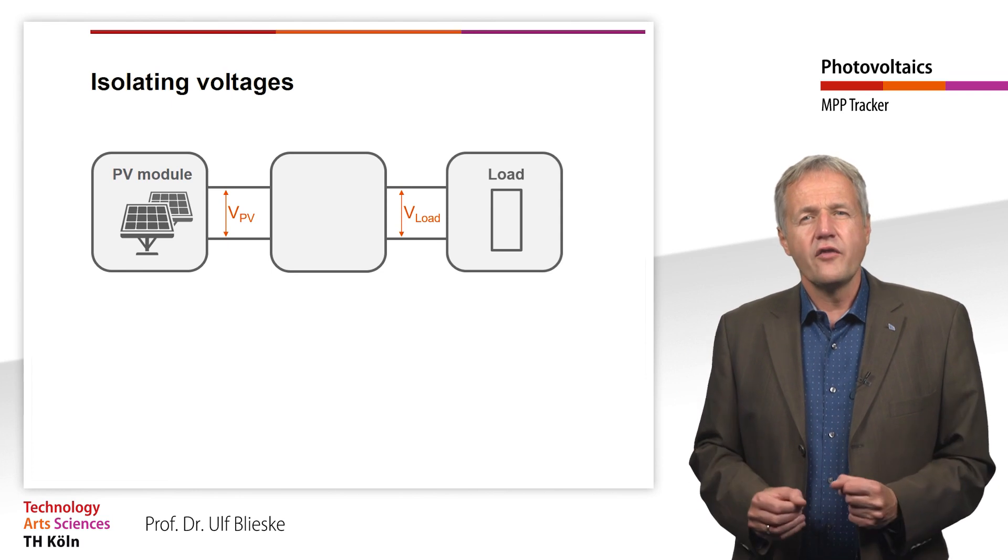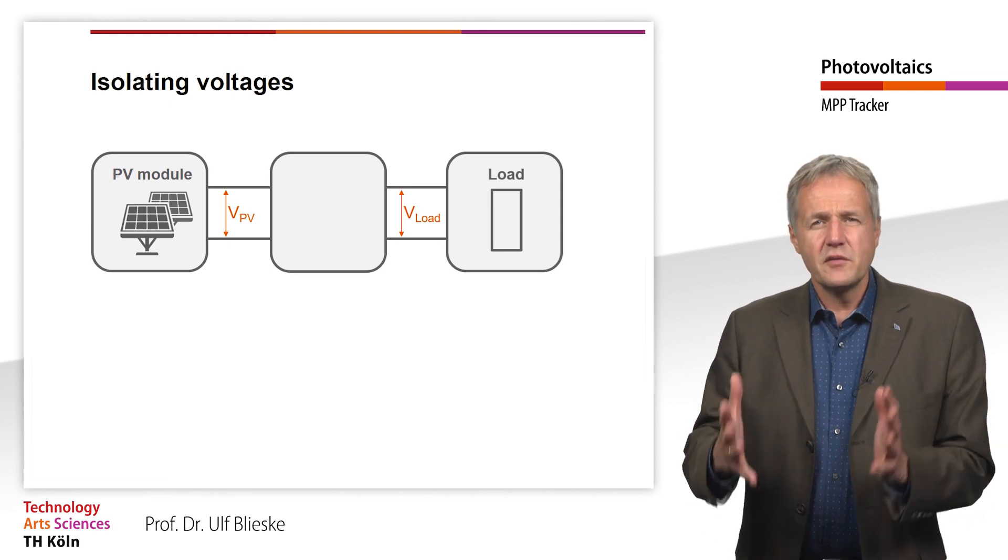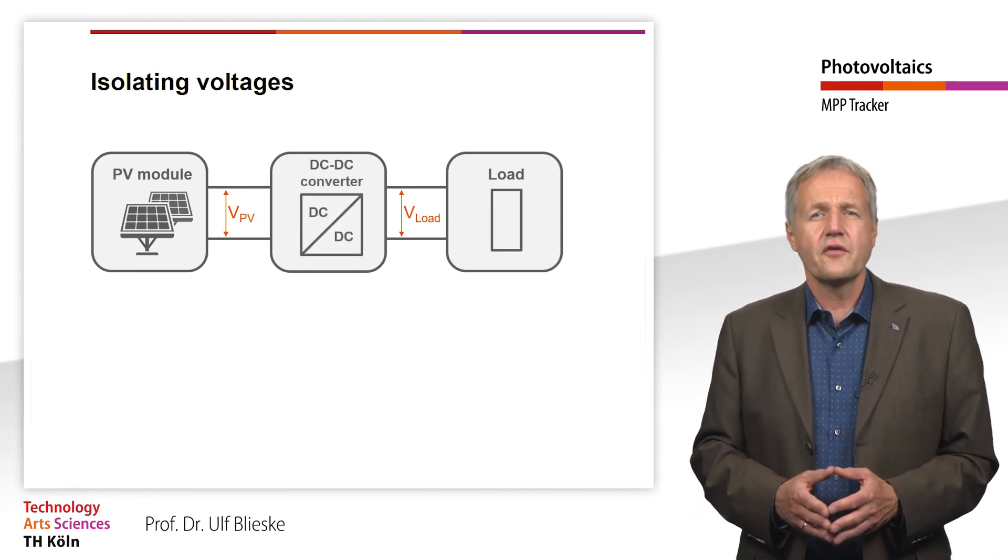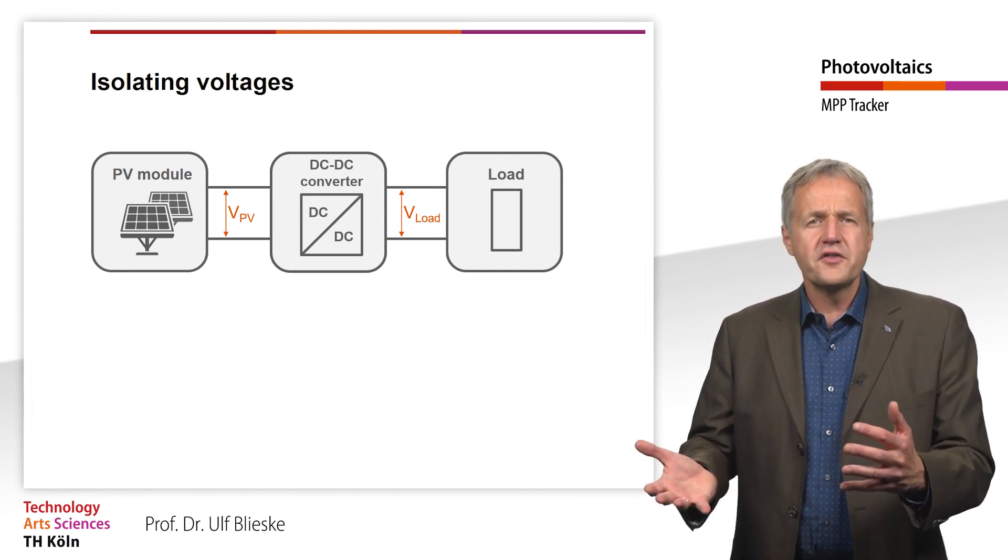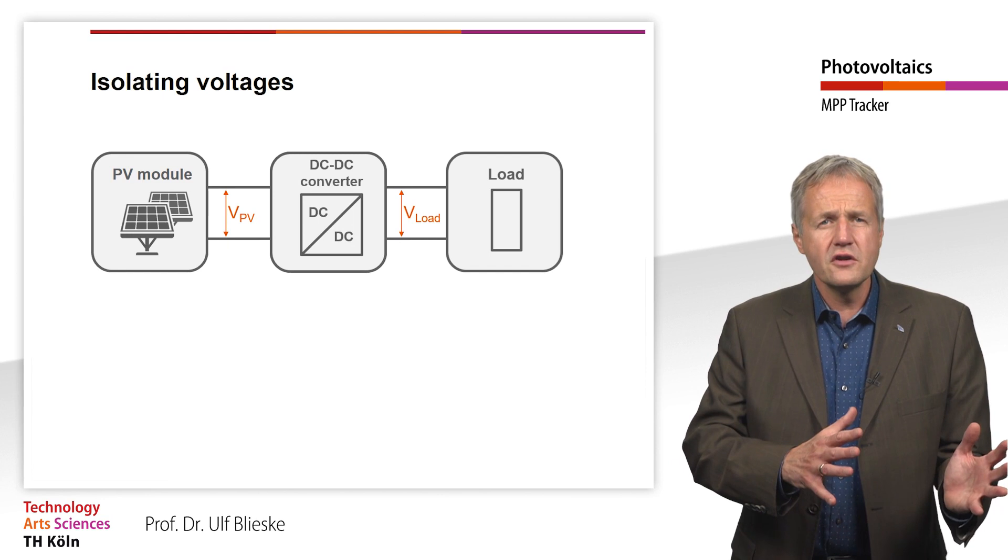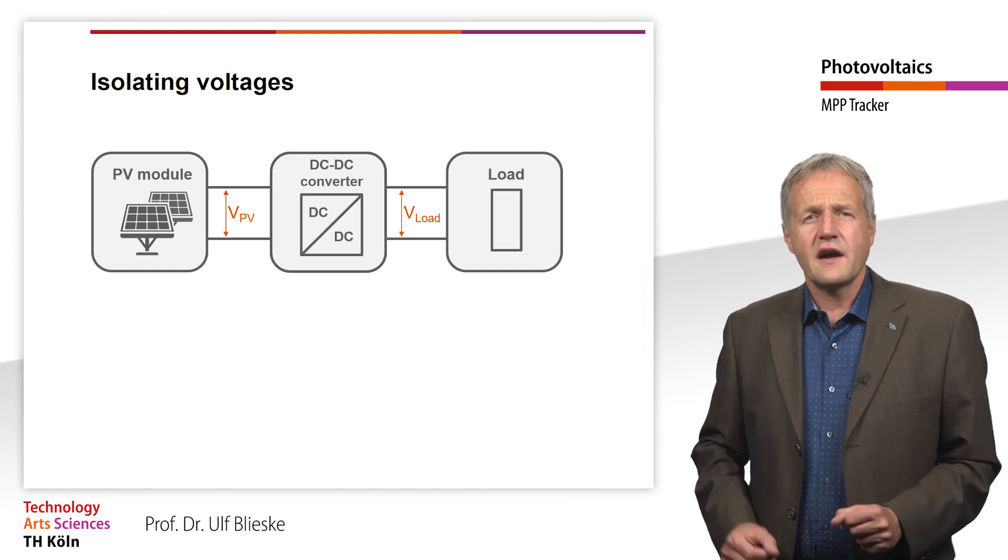For decoupling the voltages of the load and the PV module, usually a DC-DC converter is used. This DC-DC converter transforms the input voltage of the PV module into the desired output voltage.